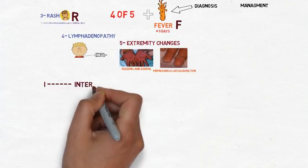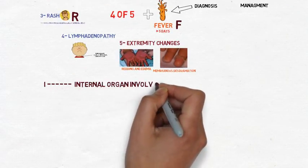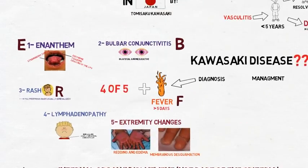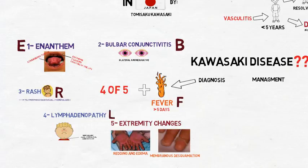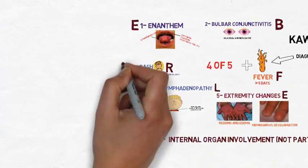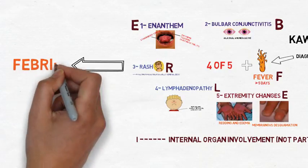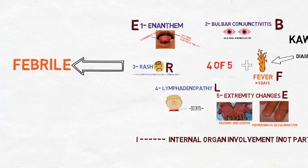I is for internal organ involvement such as the heart, but it's not a part of the diagnostic criteria. L for lymphadenopathy, and E for extremity changes. This yields the acronym FEBRILE, which is an easy way to remember the criteria.